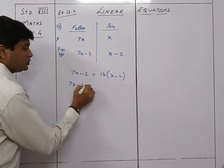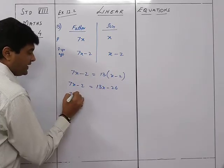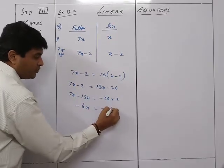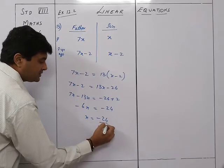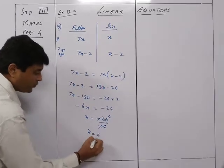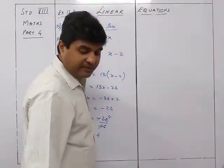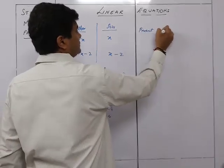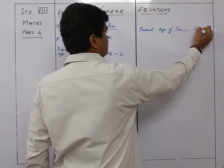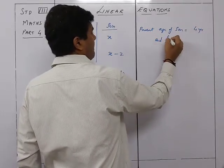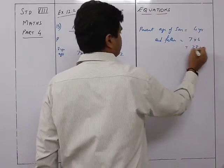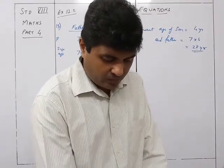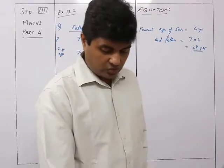Solving: 7x minus 2 = 13x minus 26, so 7x minus 13x = minus 26 plus 2, giving minus 6x = minus 24, so x = 4. Therefore the present age of the son is 4 years and the father is 7 into 4 = 28 years. That was sum number 13.